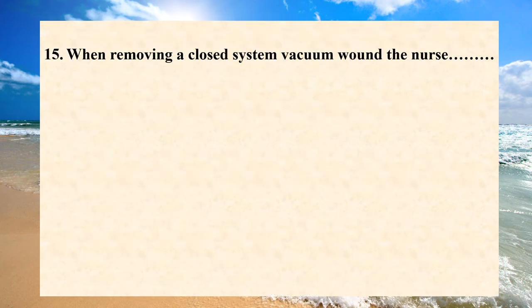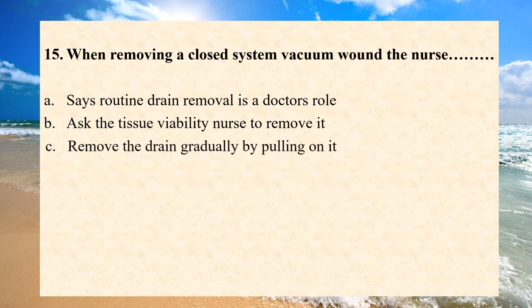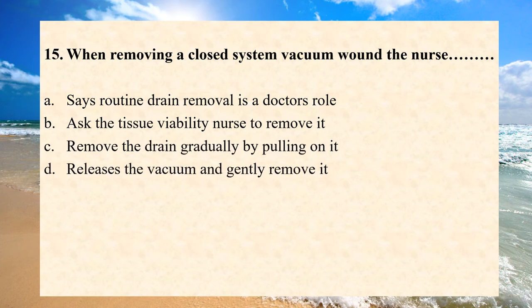When removing a closed system vacuum drain, the nurse: A. Says routine drain removal is a doctor's role. B. Asks the tissue viability nurse to remove it. C. Removes the drain gradually by pulling on it. D. Releases the vacuum and gently removes it. Answer is D. The nurse needs to release the vacuum, take out the stitch holding the drain in place, and then remove the tube.